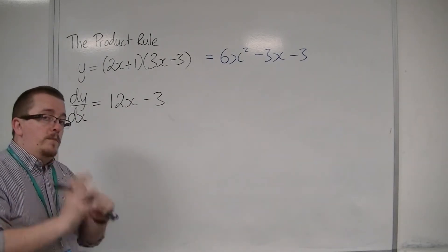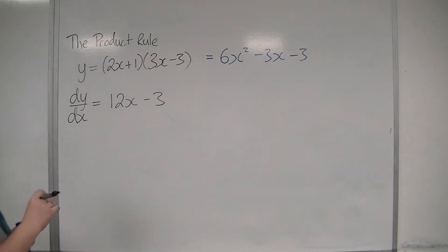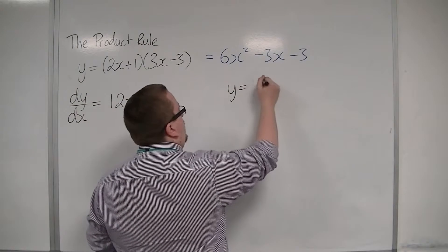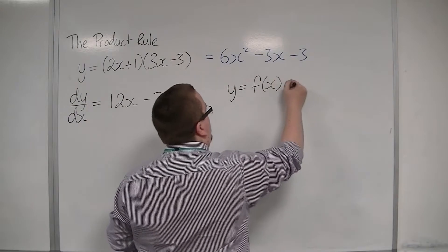So now I'm going to use the product rule. Now the product rule says that if y equals f of x times g of x,